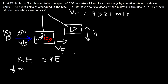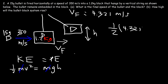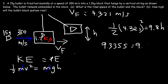Setting KE equal to PE: kinetic energy is ½mv², and potential energy is mgh. Since mass cancels, we solve for h: ½v² equals gh, so ½ times (4.321)² equals 9.8 times h. That gives 9.3355 divided by 9.8, which equals a height of 0.9526 meters.